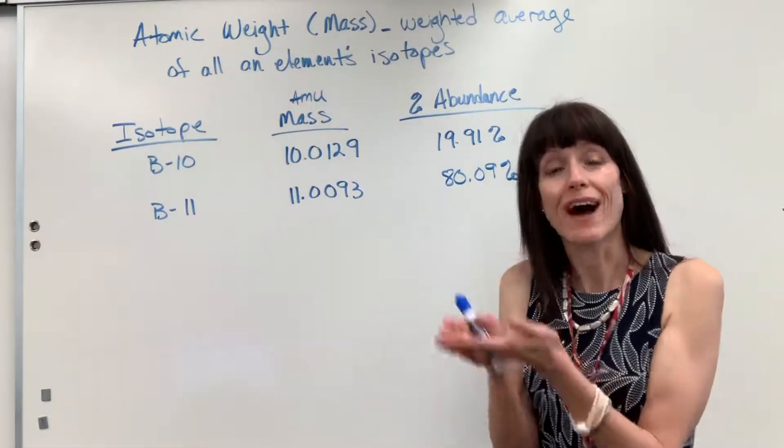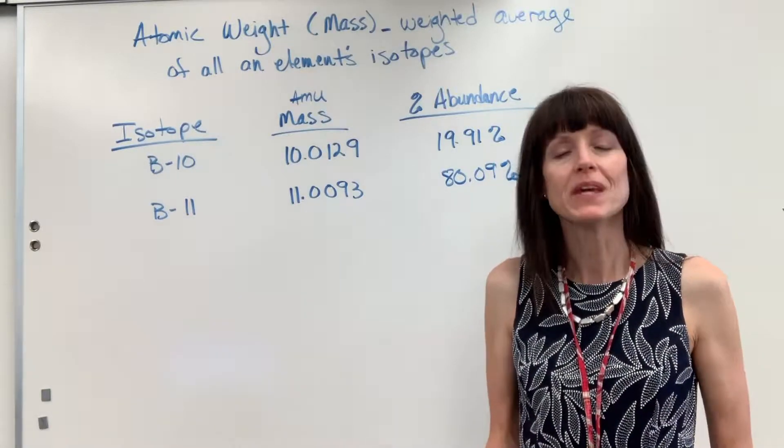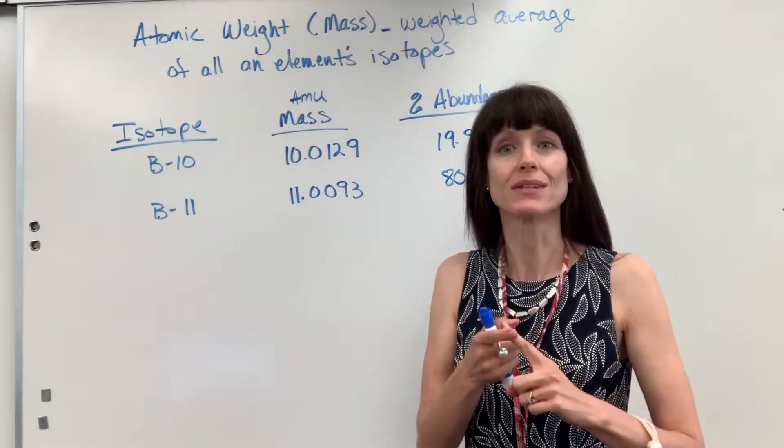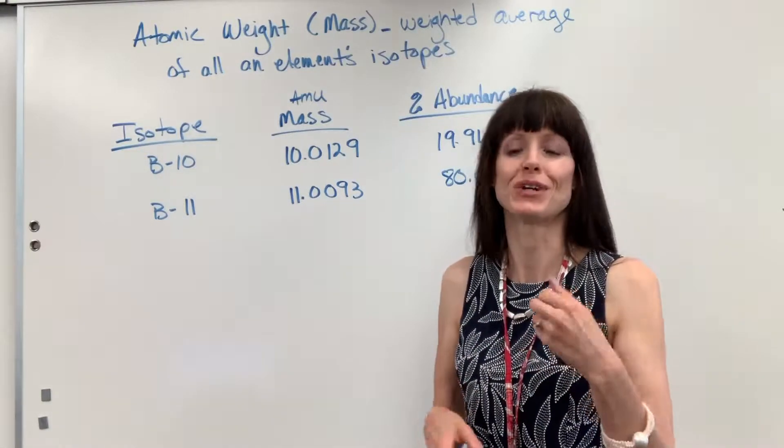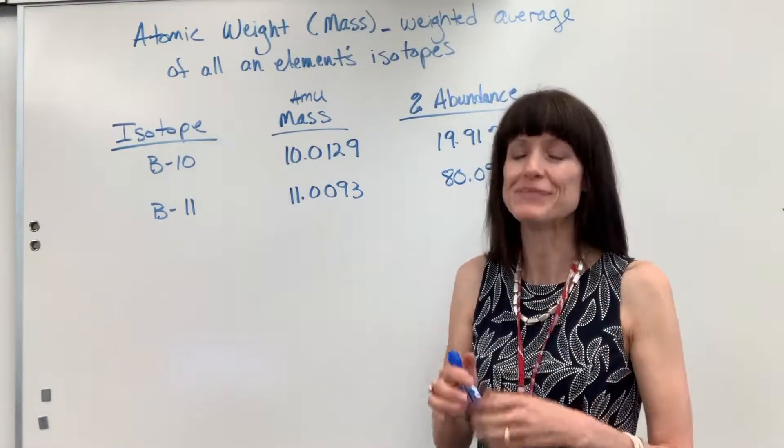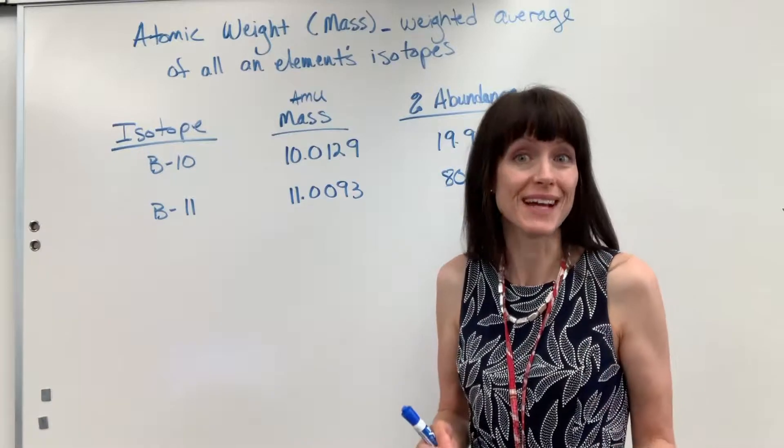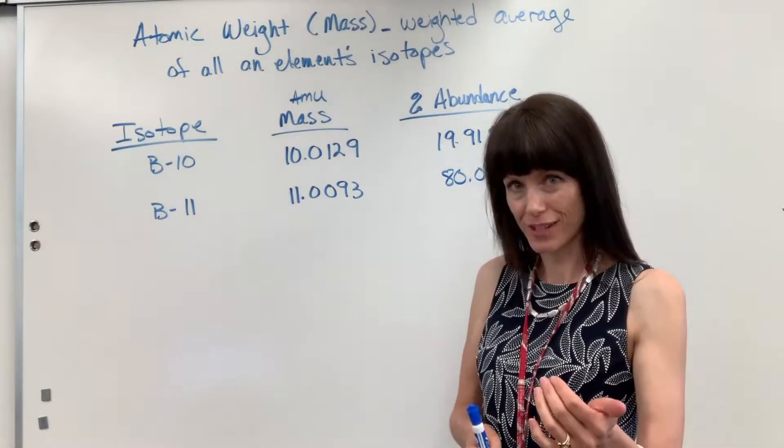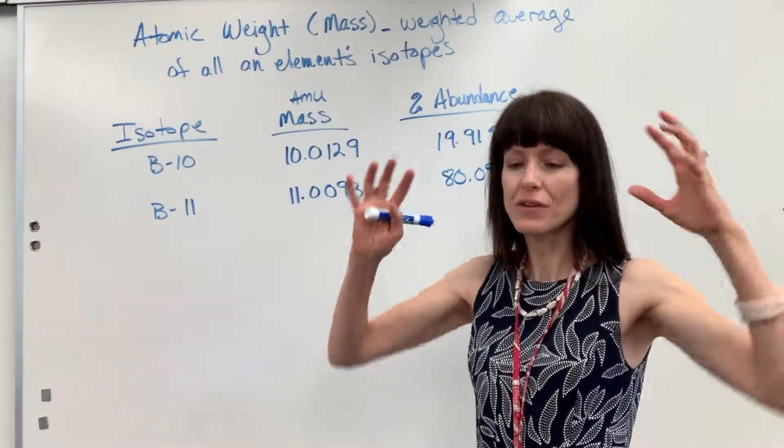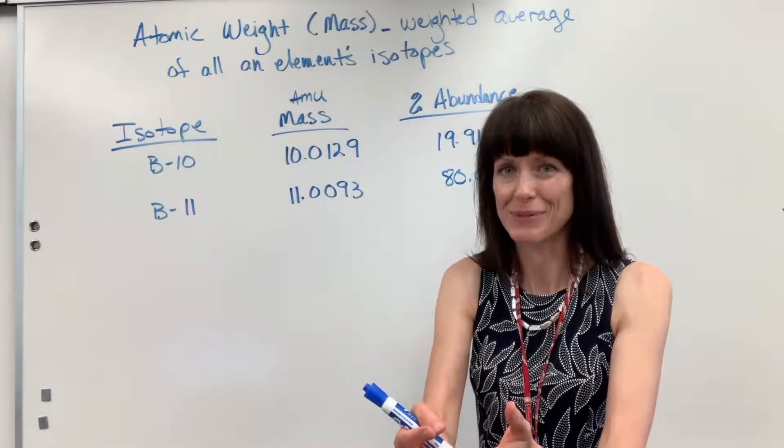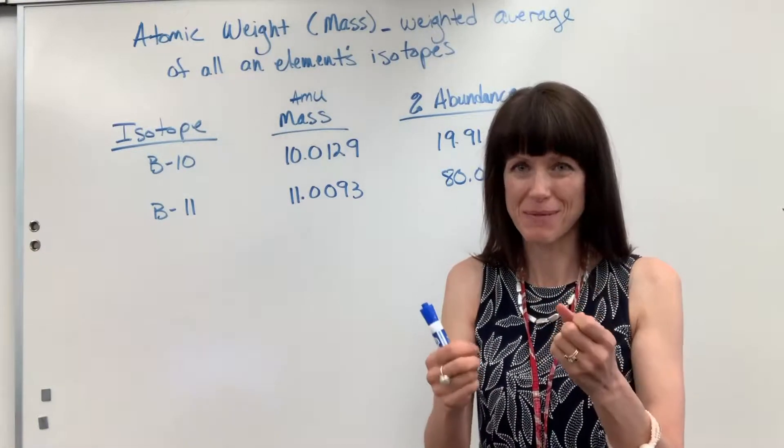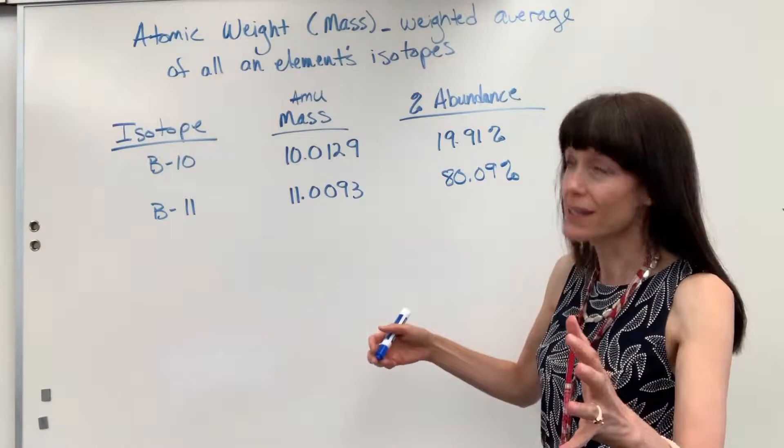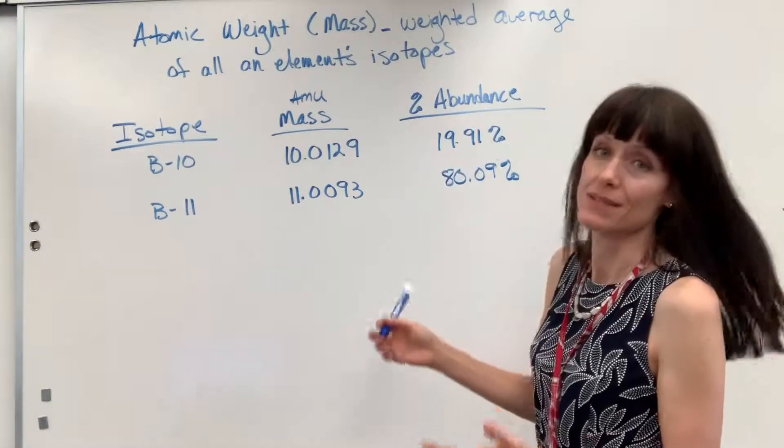What this is referring to is the value that you see on the periodic table. When you look at the periodic table there's usually two numbers. The whole number is the number of protons, your atomic number, which defines the element. The second number is always a decimal, and that decimal is the weighted average of all of the masses of that element's isotopes. So let me help you wrap your brain around this. Again, atomic mass is a weighted average of all of an element's isotopes.